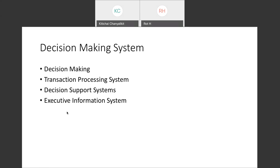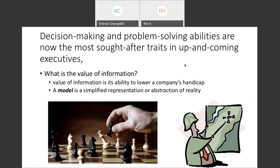Decision making and problem solving abilities are the most sought-after traits in up-and-coming executives. If you become a CEO, you need to practice these abilities. As I mentioned, when you make any decision easily, that actually means you already have a huge amount of data supporting it. For example, during lunch time — what do you want to eat? That decision is based on your preference, the money in your pocket, or your friends.